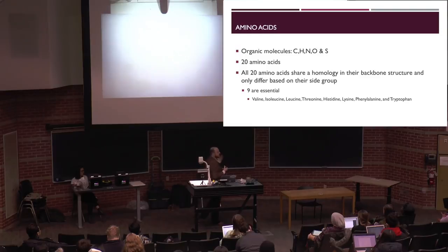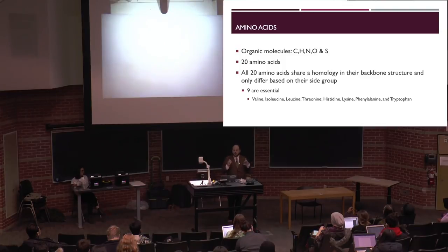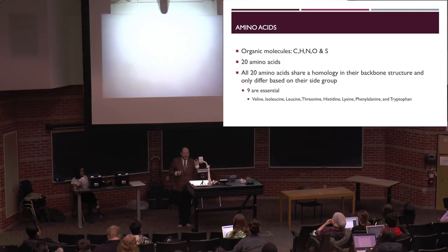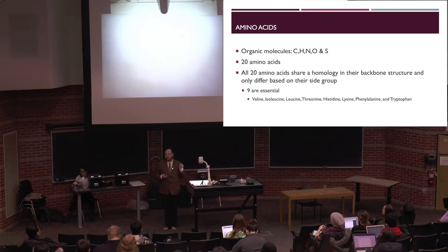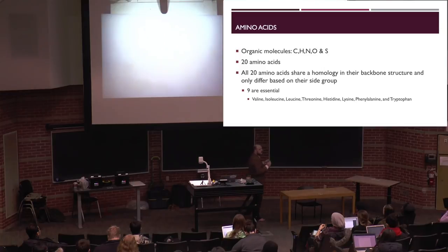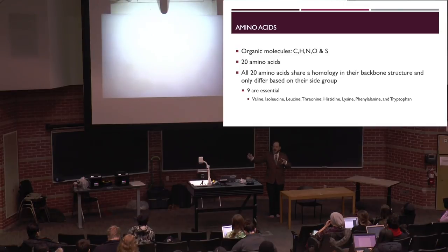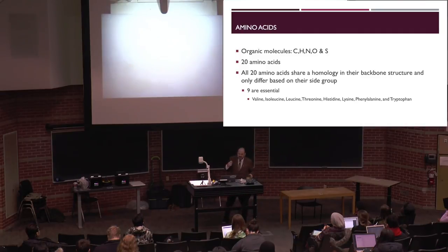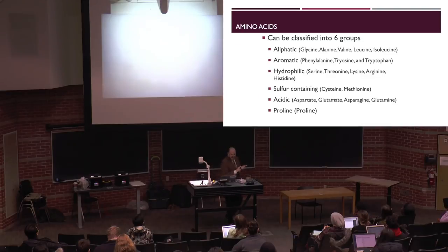There are hundreds of different amino acids, but 20 are relevant to food science and nutrition. They all share a common backbone and only differ based on the side chain present. Nine of them are essential — meaning your body has no mechanism to create them from other amino acids. The nine essential amino acids are valine, isoleucine, lysine, threonine, histidine, phenylalanine, and tryptophan.